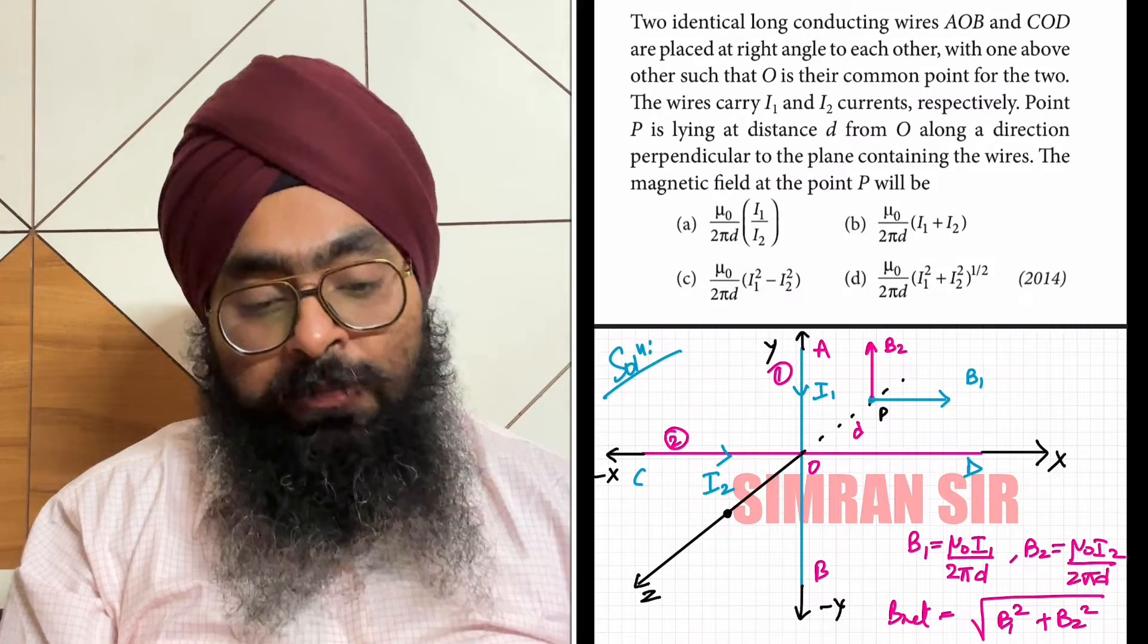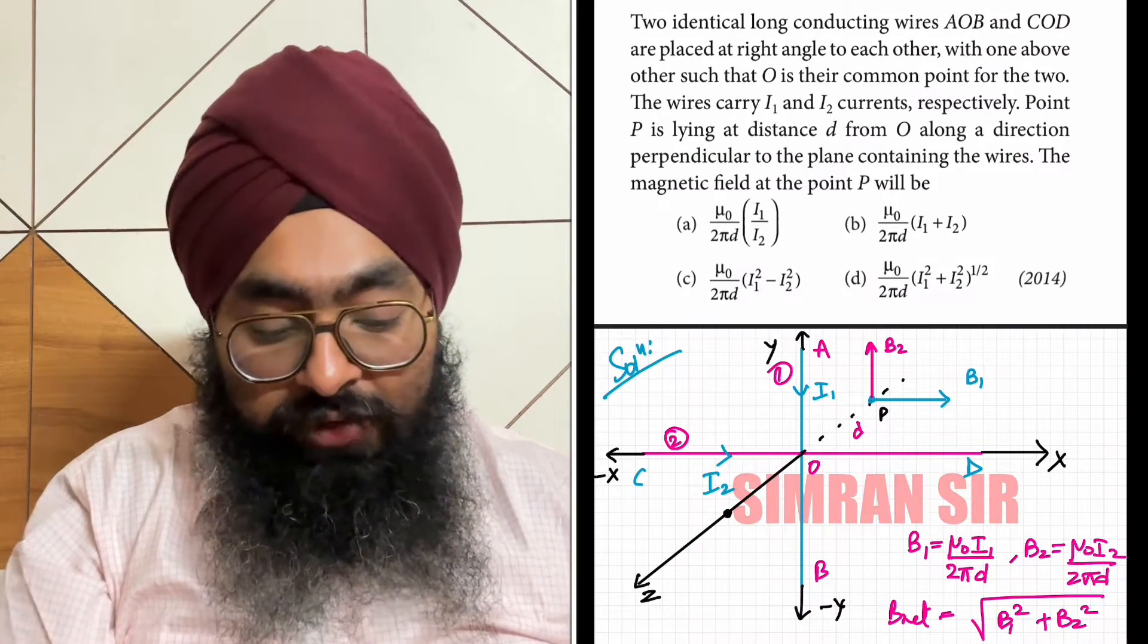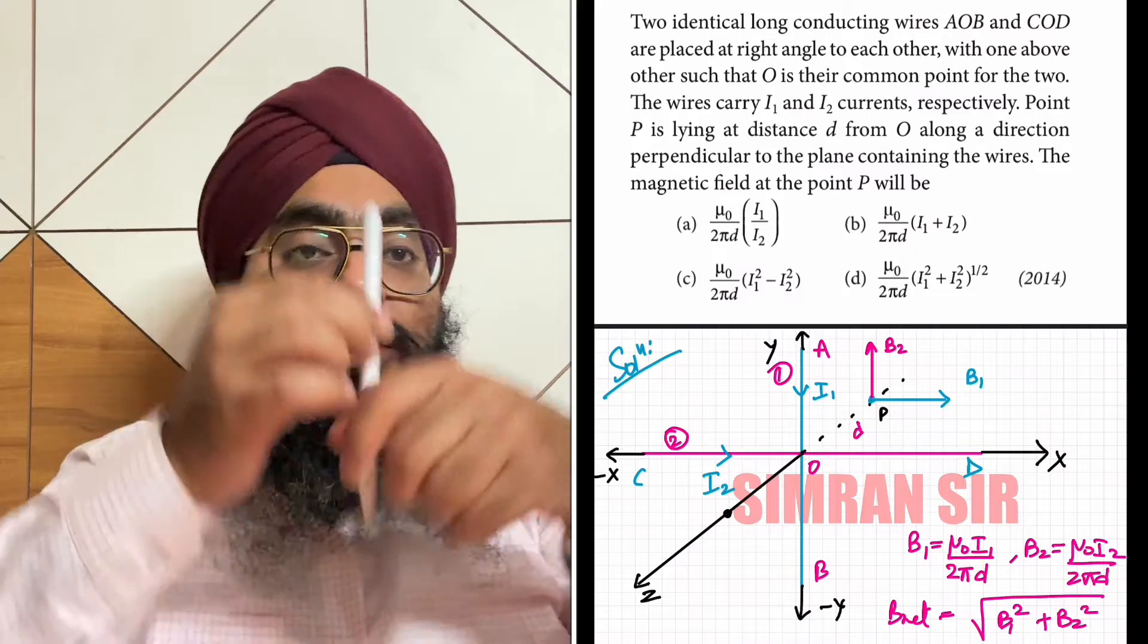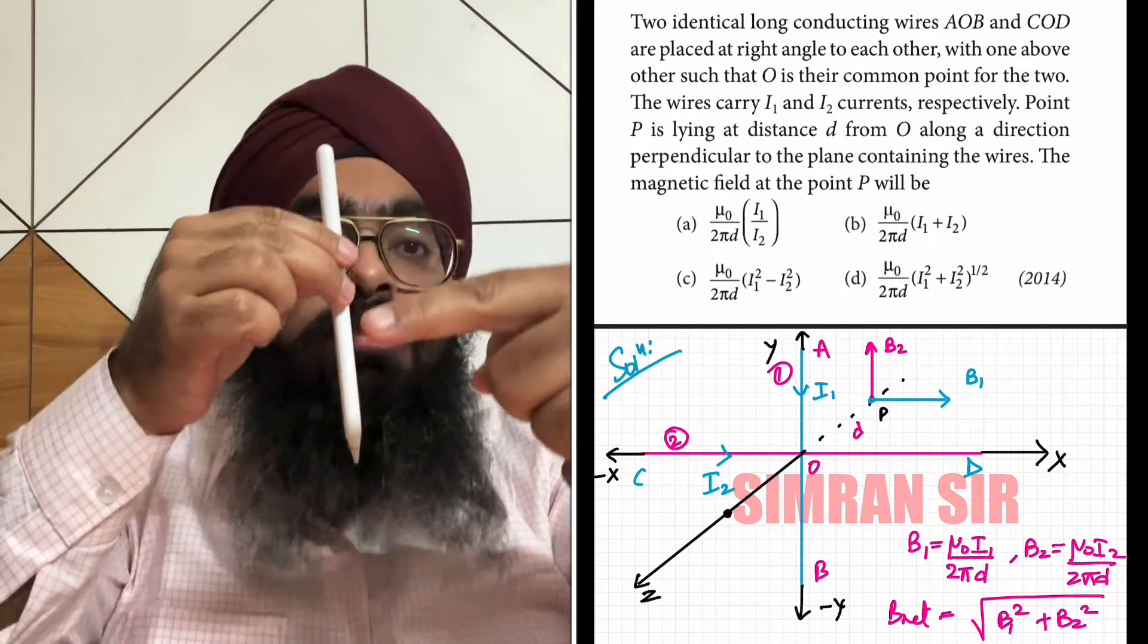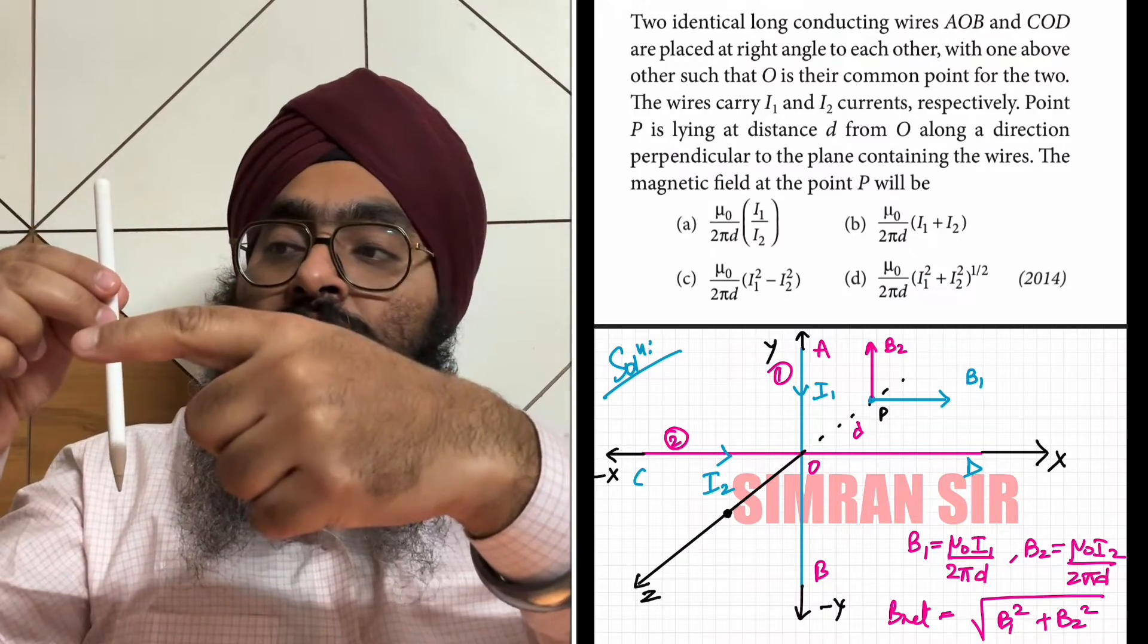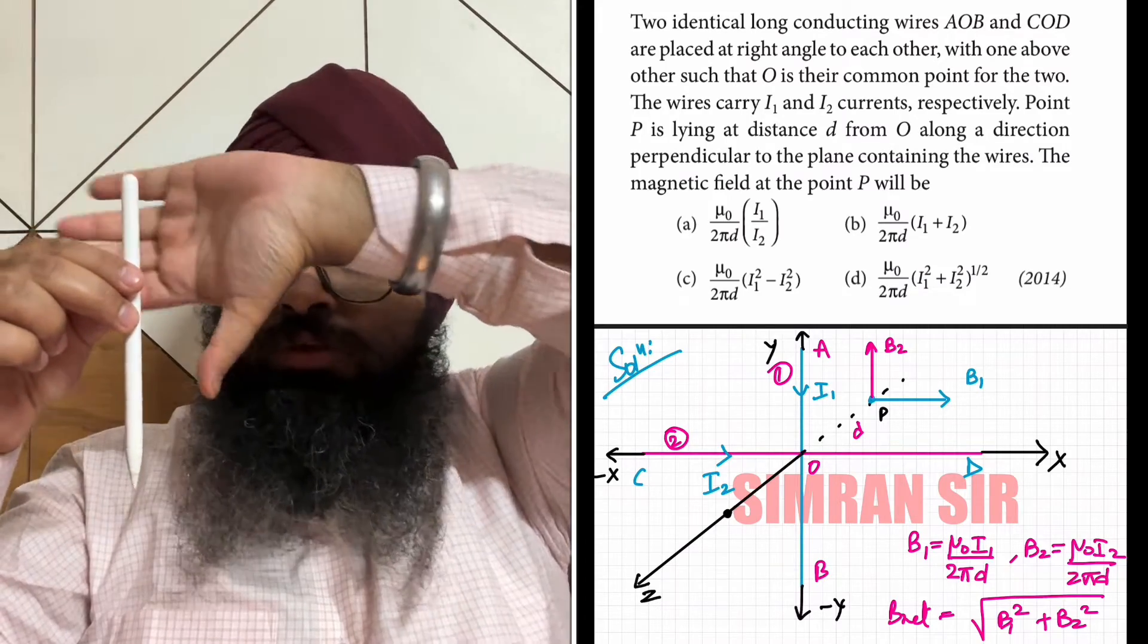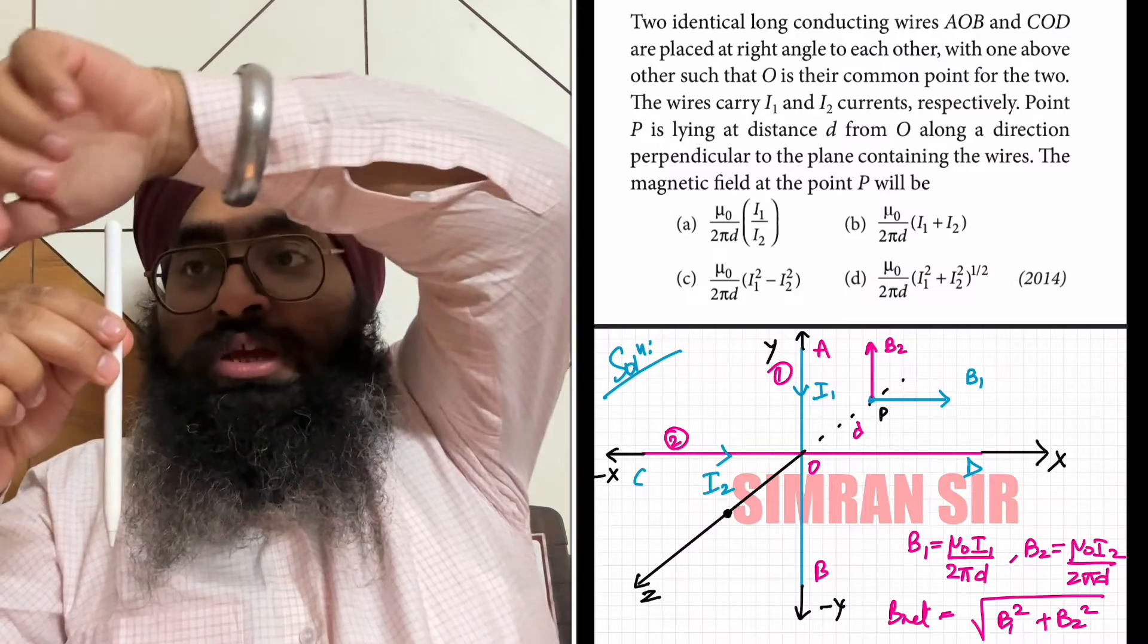Now for the direction, let's take the first wire. Current is going downward. For the point P here, if I hold my right hand and curl my fingers, the magnetic field lines form circles.